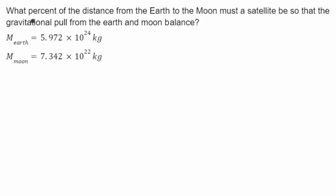In this problem, we need to find the percent of the distance from the Earth to the Moon that a satellite has to be so that the gravitational pull from the Earth and the gravitational pull from the Moon will balance.